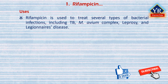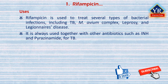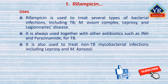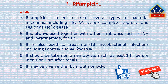The inhibitor prevents RNA synthesis by physically blocking elongation and thus preventing synthesis of host bacterial proteins. Rifampicin is an antibiotic used to treat several types of bacterial infections including tuberculosis, mycobacterium avium complex, leprosy, and Legionnaires' disease. It is always used together with other antibiotics, with two notable exceptions: as a second treatment for latent tuberculosis, and to prevent Haemophilus influenzae type B and meningococcal disease in people who have been exposed to those bacteria. It is used in combination with isoniazid and pyrazinamide for the treatment of tuberculosis, and is also used to treat non-tuberculosis mycobacterial infections including leprosy and mycobacterium kansasii. It should be taken on an empty stomach, at least one hour before meals or two hours after meals, and may be given either by mouth or intravenously.